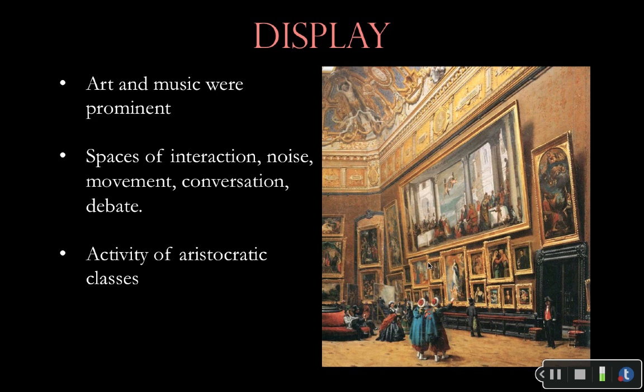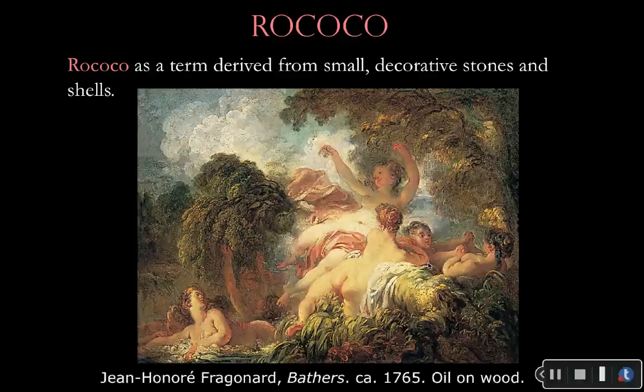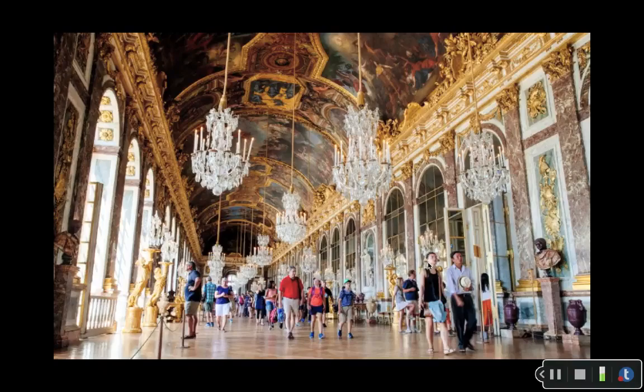We're going to talk about a variety of styles today, starting with Rococo. This is an important style that came about in the mid-18th century. The term Rococo was derived from words basically meaning small decorative stones and shells. Paintings of this style were really influenced by the style we see at Versailles, the great palace just outside of Paris that was the palace of King Louis XV — the king who ruled right before the French Revolution. It was certainly a space of decoration, self-indulgence, glitter, and glam, including amazing chandeliers in the Hall of Mirrors.